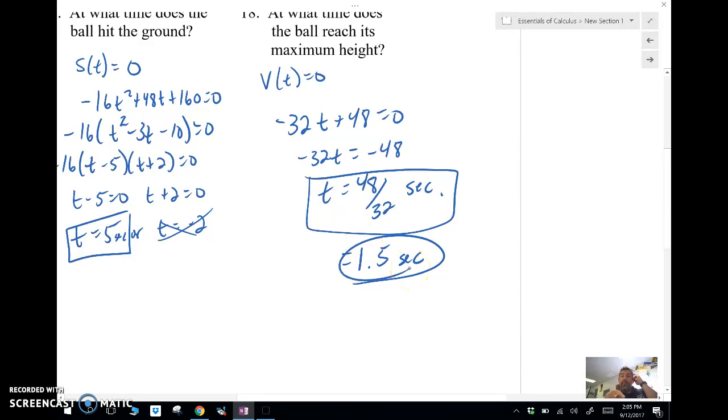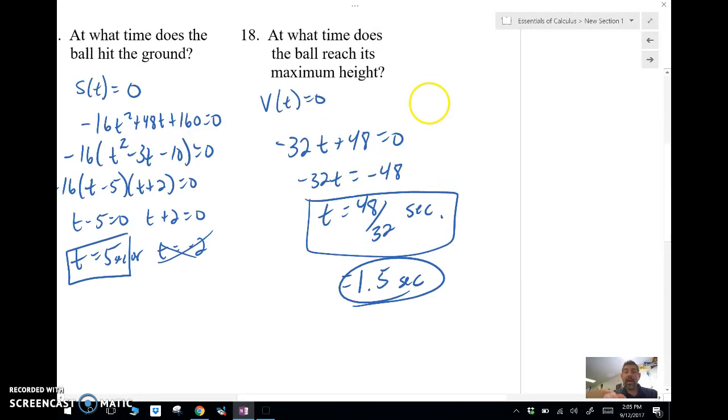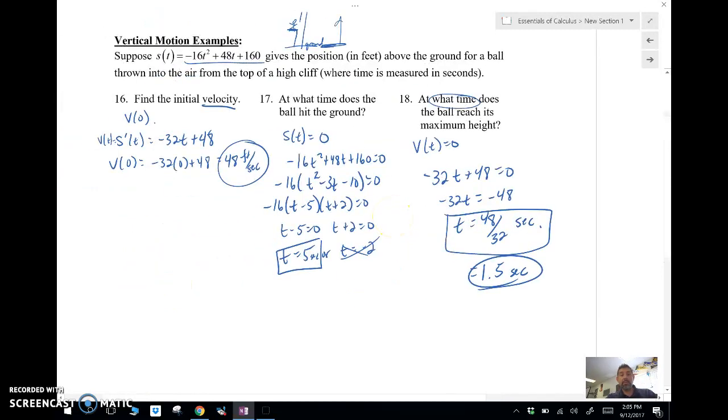So the key thing for this video here is understanding when the maximum height is going to be. If I wanted to know what the maximum height is, I would plug in 1.5 seconds into my original formula to find the height at 1.5 seconds or the position. The big thing is, understand the maximum height is when the velocity equals 0. When it hits the ground, s equals 0. We're taking the derivative of position. We can even ask a question about acceleration. If we wanted to, we would just take the second derivative. Okay, folks, there you go. Position, velocity, acceleration.